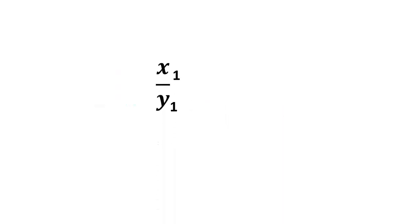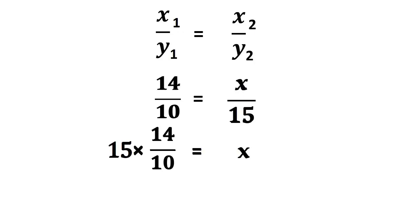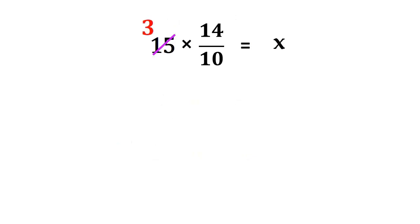That is, x1 by y1 equals x2 by y2. We have 14 by 10 equals x by 15. So, 14 into 15 by 10 equals x. By simplifying this, we get the height of another pole as 21 meters.